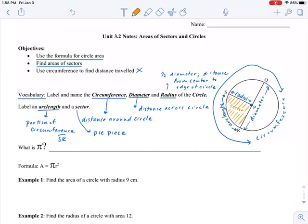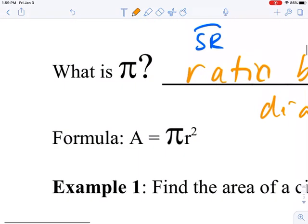A sector is like a pie piece, so I'll do this in a different color. Here's a sector. The next thing we need to review is what is pi. Pi is the ratio. Pi is approximately 3.14159. It goes on forever and it never repeats.